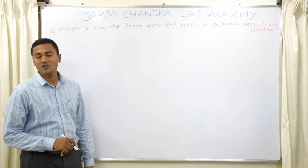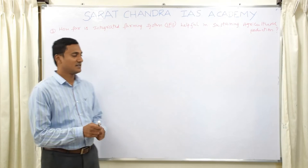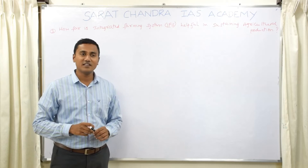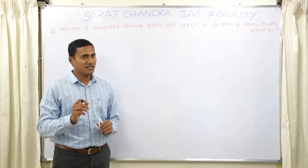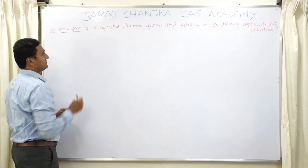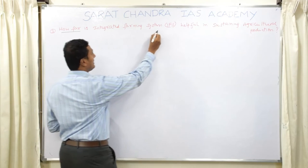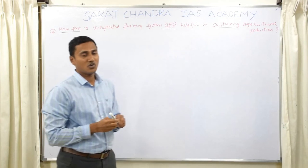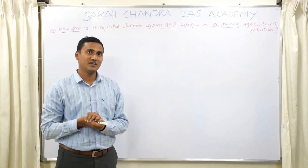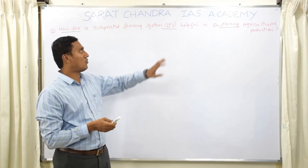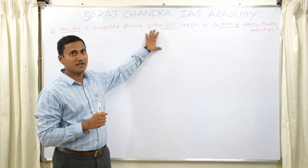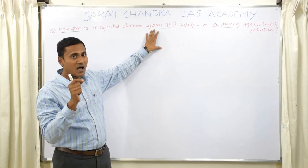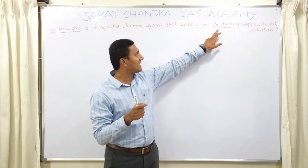The third question of GS Paper 3: 'How far is the integrated farming system helpful in sustaining agricultural production?' Notice the phrase 'how far' — the question is asking about the integrated farming system's role in sustaining agricultural production. In this answer, you should initially start by discussing what the integrated farming system is, then for every component of it, explain how it helps in sustaining agricultural production. Sustaining means the practice, if followed, will be helpful for a long time.